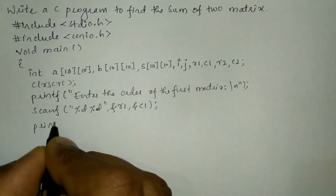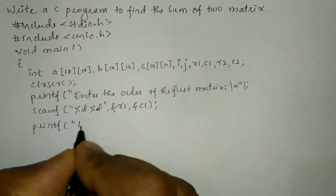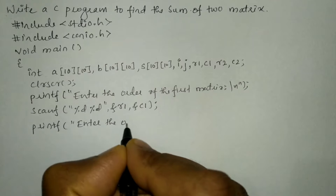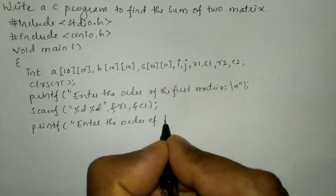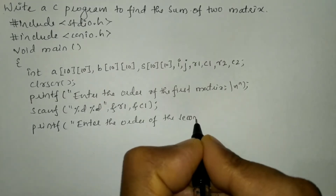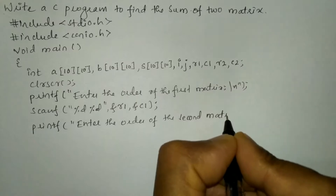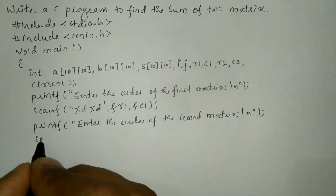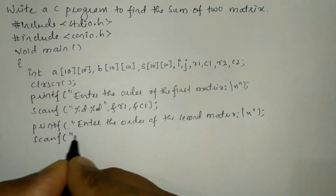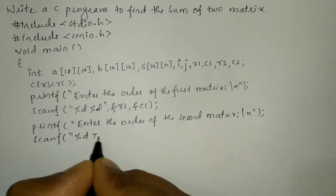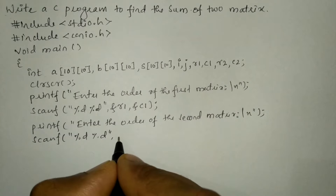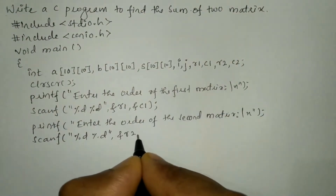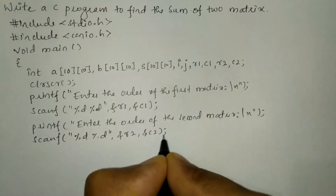Now we'll ask the user to enter the order of the second matrix. In a printf statement I'm going to write 'enter the order of the second matrix' with a newline and semicolon. Next we'll write scanf with %d %d format specifier, and we are going to take R2 and C2 — ampersand R2 comma ampersand C2 and put semicolon.